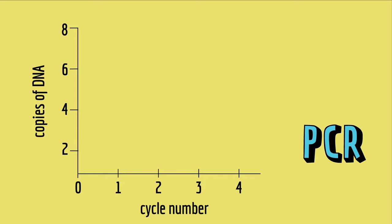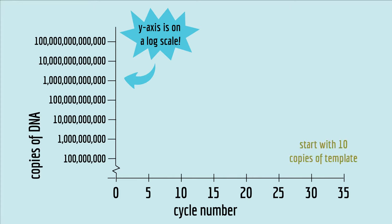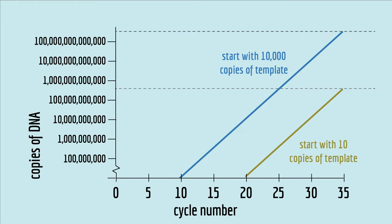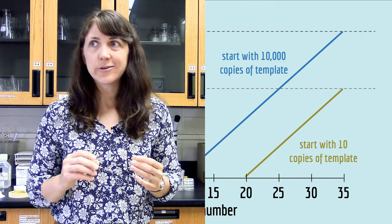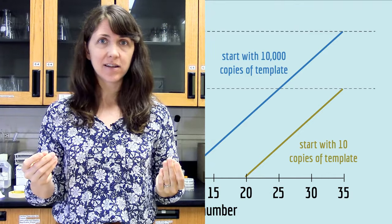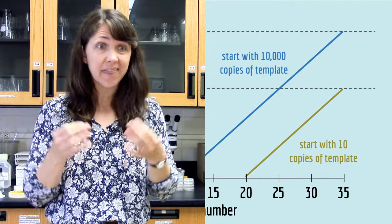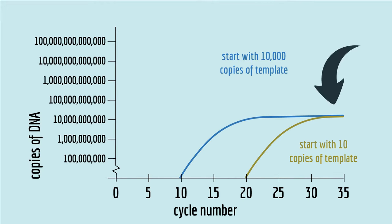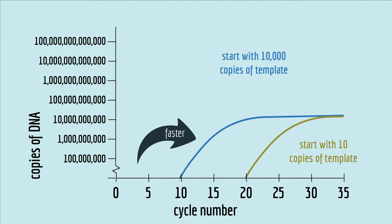Remember that normal PCR is an exponential process. If you start with just one copy of the DNA template, you'll have two copies after the first cycle, four copies after the second cycle, and so on. Now, if you start with 10 copies of template — a sample that doesn't have very much virus in it — in principle after 35 cycles you'll end up with over 300 billion copies. And if you start with 10,000 copies of template, after 35 cycles you should end up with 300 trillion copies. So why can't you just look at the end of the PCR reaction and see which sample has more DNA? The problem is a PCR reaction runs out of nucleotides before it can make that much DNA. So what actually happens is both samples end up with the same amount of DNA at the end, but the sample with more starting template made more DNA faster.